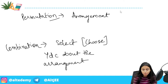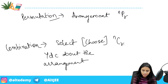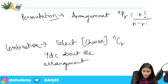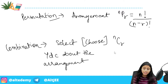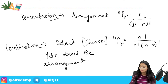Now for the notation: combination is written as nCr, where C stands for combination. Permutation is written as nPr. The formula for nPr is n factorial divided by (n minus r) factorial. The formula for nCr is n factorial divided by r factorial times (n minus r) factorial.